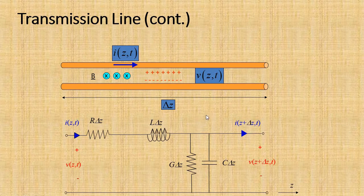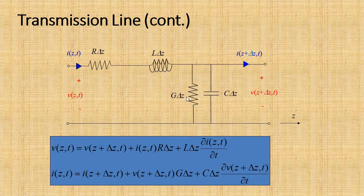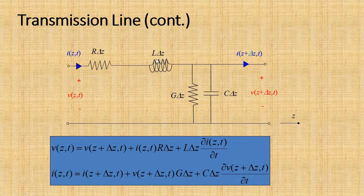So let's go through the further equations. In this circuit we can apply KVL and KCL. The first equation is basically a form of KVL. From the source side, V(z,t), we can write the KVL equation: minus V(z,t) plus R·ΔZ·I plus L·ΔZ·∂I/∂t plus V(z+Δz, t) equals zero. This is our KVL equation.